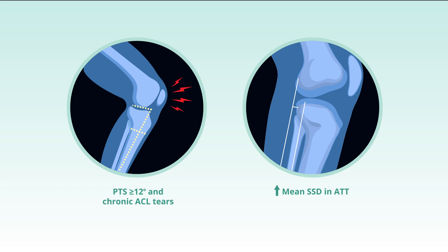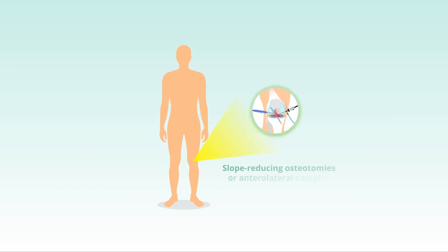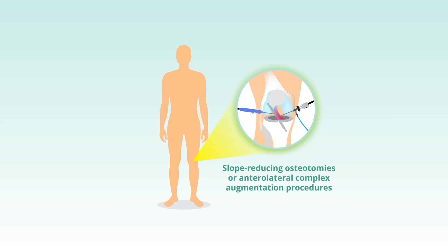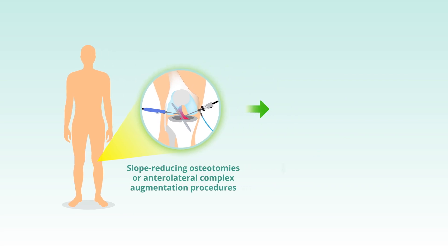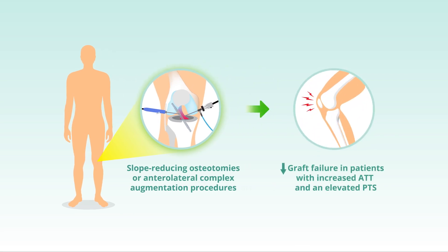Overall, these findings suggest slope-reducing osteotomies or anterolateral complex augmentation procedures may be recommended to reduce graft failure in patients with increased ATT on ACL stress x-rays and an elevated PTS of greater than or equal to 12 degrees following primary ACLR.